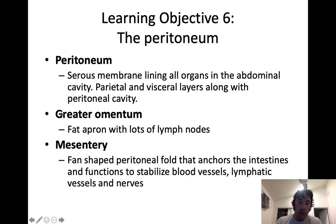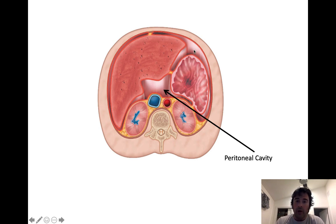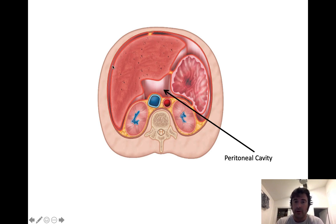Two peritoneal folds you need to be familiar with are the greater omentum and the mesentery. If we take a transverse section of the abdominal cavity looking from inferior to superior, we can see the liver, stomach, and kidneys. This image identifies the peritoneal cavity and what's meant by retroperitoneal. The layer of the serous membrane contacting the organs is the visceral peritoneum. The layer contacting the body cavity wall is the parietal peritoneum. The space in between is the peritoneal cavity, filled with peritoneal fluid which protects and lubricates organs.